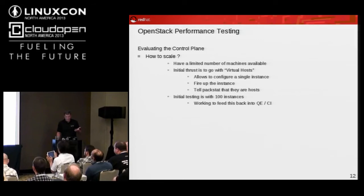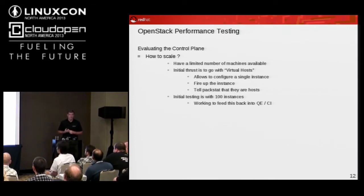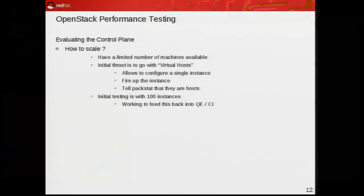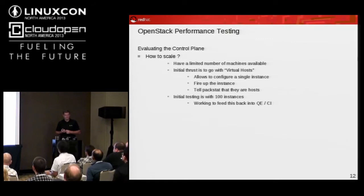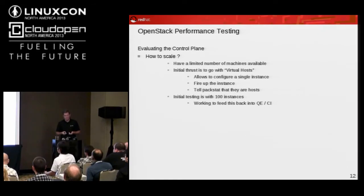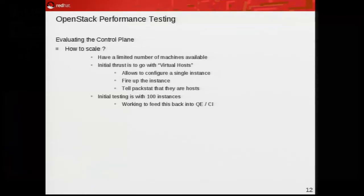How to scale is one of the questions we keep asking. We have a very limited number of machines available in the performance lab — I think we're at about 35 now, which when you're trying to simulate something that's going to be tens of thousands, is small. So one way we're doing it is in the initial work we used our RHEV product. We'll probably switch to use OpenStack now and do triple-O, OpenStack on OpenStack. Basically, you go create a bunch of instances under virtualization and tell Packstack when you bring those up that those are all hosts you're feeding as Nova compute nodes. You don't really try to test guest performance in them, but it's great for testing the management platform.